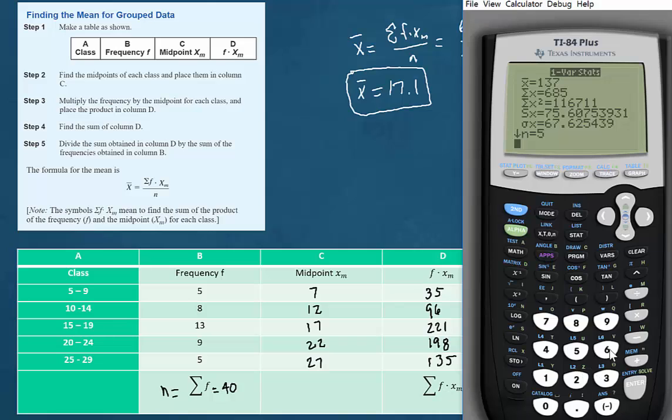Then when we do that calculation, 685 divided by 40, we wind up with the 17.125 number which we know we're going to round to 17.1.